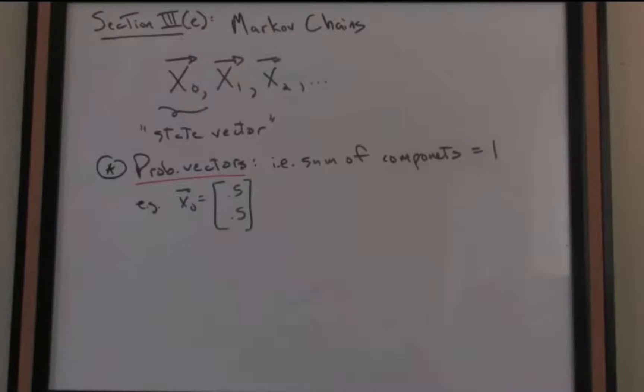So let's see some notation then. We have a sequence of what are called state vectors for a Markov chain. By the way, these vectors will be called state vectors because one of the goals typically of Markov chains is to model change of a dynamical process over time.